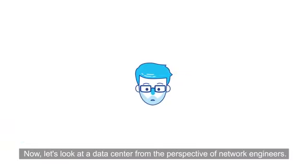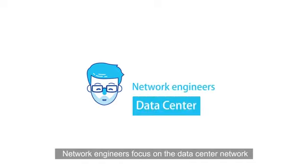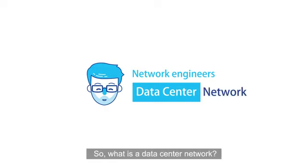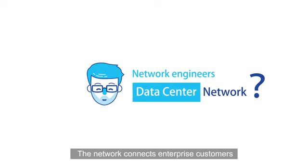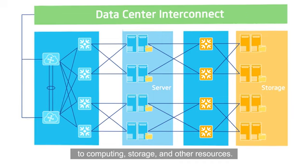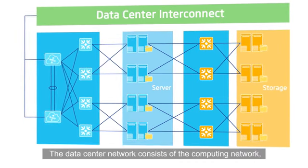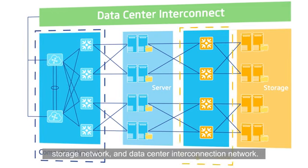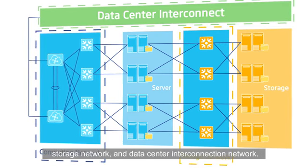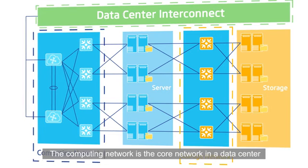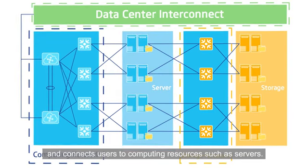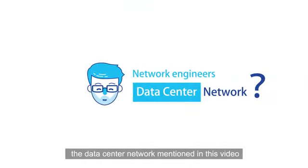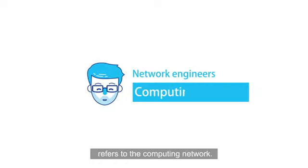Now, let's look at a data centre from the perspective of network engineers. Network engineers focus on the data centre network when they look at a data centre. So, what is a data centre network? A data centre network is part of the infrastructure in a data centre. The network connects enterprise customers to computing, storage and other resources. The data centre network consists of the computing network, storage network and data centre interconnection network. The computing network is the core network in a data centre and connects users to computing resources such as servers. Unless otherwise specified, the data centre network mentioned in this video refers to the computing network.